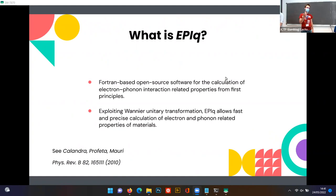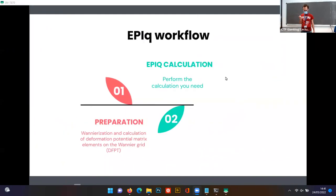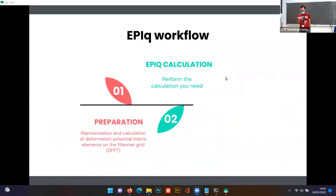The typical workflow of a calculation with EPIc is basically made by three steps. The first step is to prepare your calculation and this includes the Wannierization procedure of your system together with the calculation in linear response of some operator that you are interested in calculating. Then you proceed with your calculation and you can analyze your results with some of the post-processing that are included in the public release.